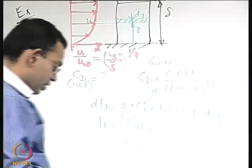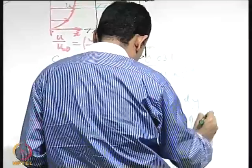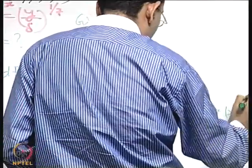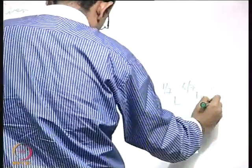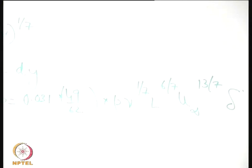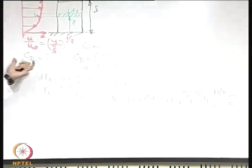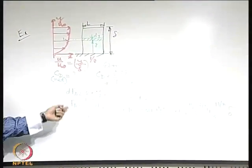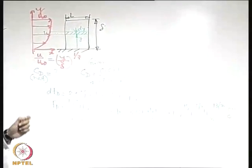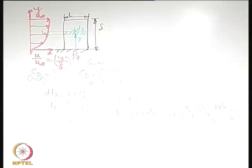The net CD is somewhat artificial; what is more important is the drag force itself. You can define a net CD using any reference velocity, say u∞, as: CD_net = F / (½ρu∞² × δ × L). The drag force is the physically meaningful quantity. Let us now work out another problem.